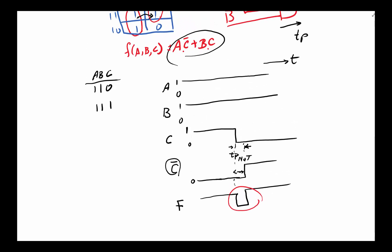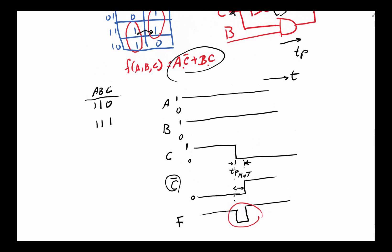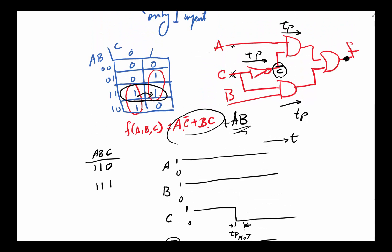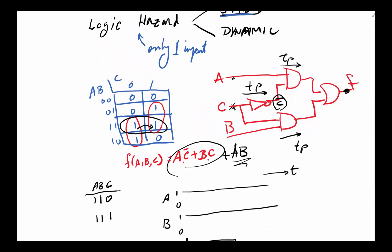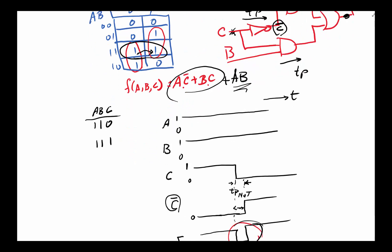Can we fix this? Yes! We can fix it by adding another prime implicant — specifically the group ab — as an additional term in our equation. Adding this term basically eliminates this pulse. In the case of a logic hazard, whether it's dynamic or static, we can fix it by adding a redundant term.